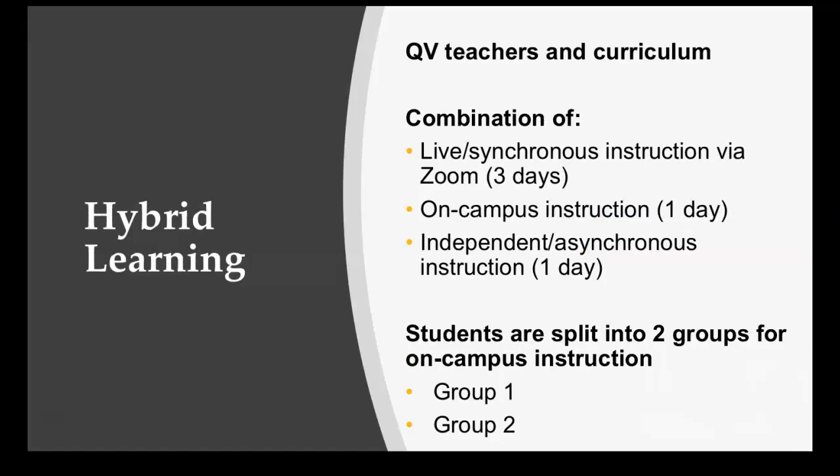The Quaker Valley Middle School on-campus hybrid learning model uses Quaker Valley teachers and curriculum and allows for four days of live instruction, including three days of synchronous instruction via Zoom and one day of on-campus instruction in a smaller group setting. Students will be split into two groups for on-campus instruction in order to adhere to the district's health and safety plan. The groups will be organized alphabetically, and the alphabetical split will be consistent between Quaker Valley Middle School and Quaker Valley High School so that families with students in both buildings will follow the same schedules. In the hybrid model, students will only have one day of independent asynchronous learning.